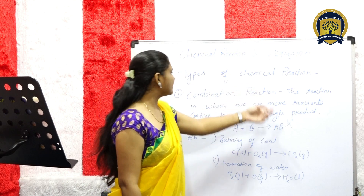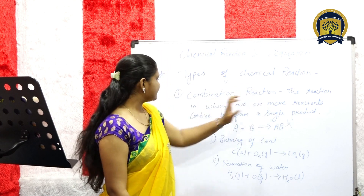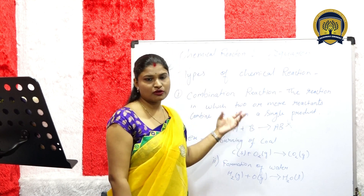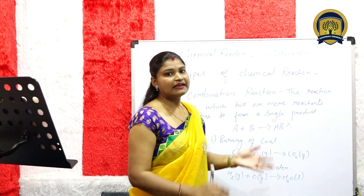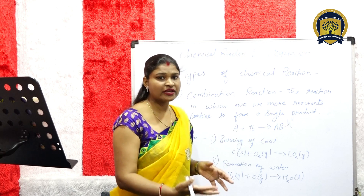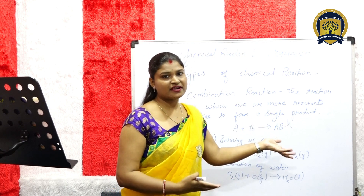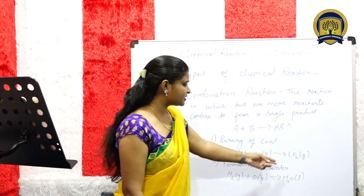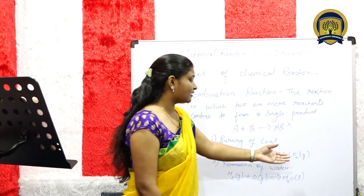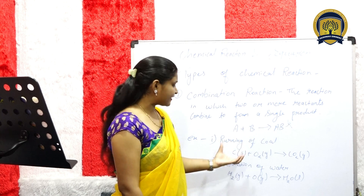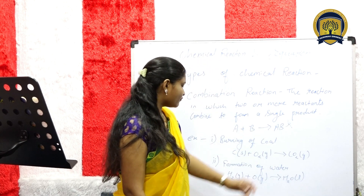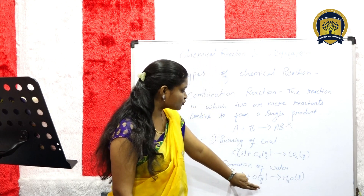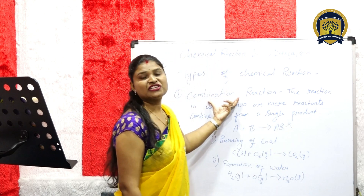Next topic: Types of Chemical Reaction. First, combination reaction. The reaction in which two or more reactants combine to form a single product. Here we have two or more reactants on the reactant side, but when the combination reaction occurs, we get only a single product. For example, burning of coal: carbon plus oxygen gives carbon dioxide. Carbon dioxide is a gas and forms only one product. Second example, formation of water: hydrogen plus oxygen gives water. There are two reactants and one product. This reaction is called a combination reaction.